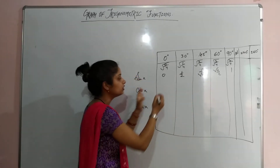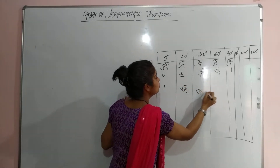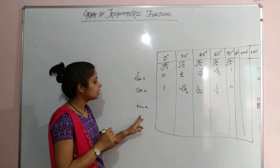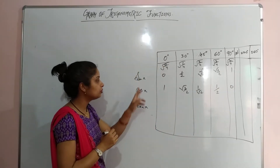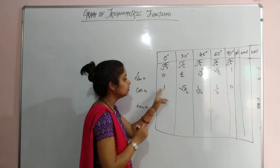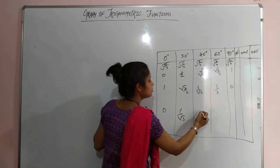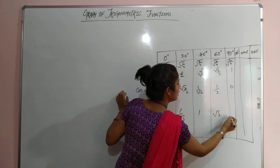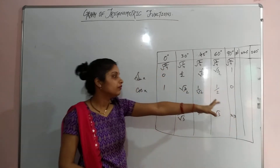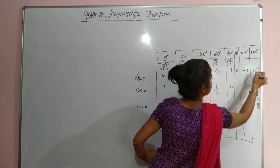For cos x, you just write the sine values in reverse order: 1, √3/2, 1/√2, 1/2, and 0. For tan x, it is the ratio of sine to cos, so take the reciprocal accordingly: tan values are 0, 1/√3, 1, √3, and undefined at 90° because it is 1/0, which is not defined.